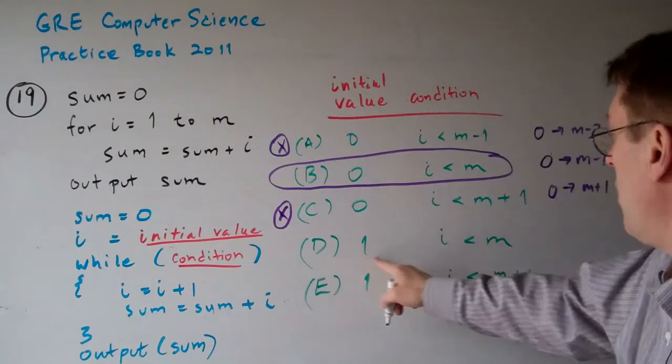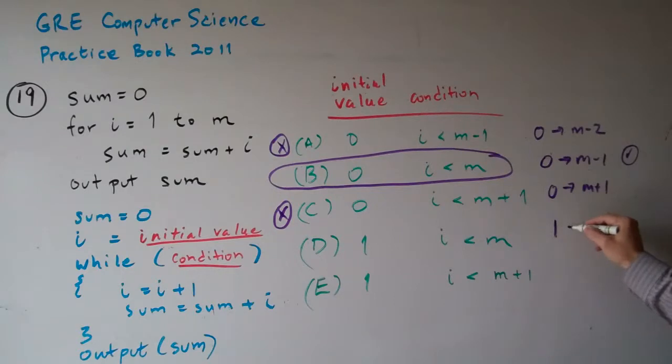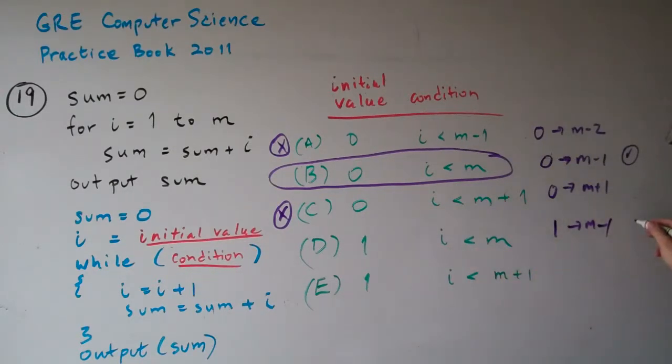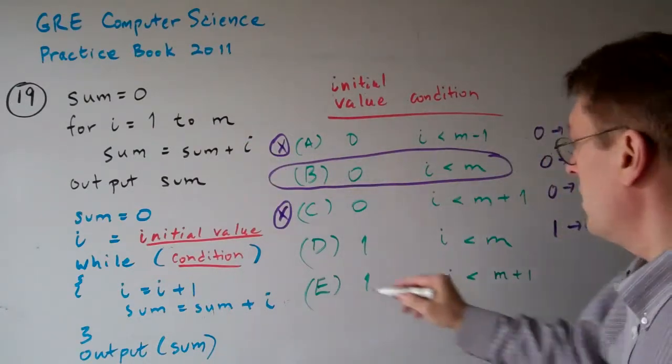Option D: we go from 1 to i is less than m. So here we're going from 1 to m minus 1, because we're not going to go all the way to m. So that's not enough iterations. 1 to m minus 1 is just m minus 1 iterations. We need m iterations. That's not correct.